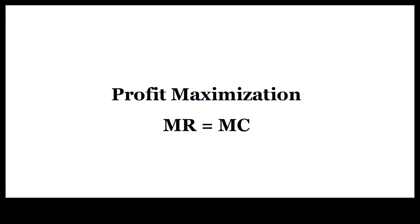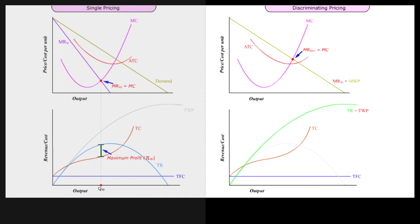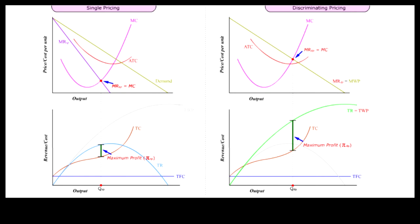Regardless of how pricing is done, profit is maximized when marginal revenue MR from selling the product is equal to marginal cost MC of producing it. Under single pricing, profit is maximized where MRSP is equal to MC. Under discriminating pricing, profit is maximized where MRDP is equal to MC. Although the same rule is followed under both, the resulting output level and profit level are quite different.